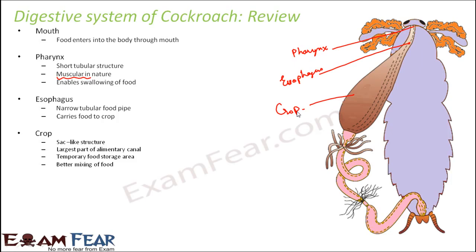The crop is a sac-like swollen structure present towards the end of the esophagus. It is the largest part of the alimentary canal — if you look at the diagram, the crop occupies a much larger portion than the pharynx or esophagus. Its function is to serve as a temporary food storage area, storing food so it can be sent to the intestine gradually for digestion and absorption.